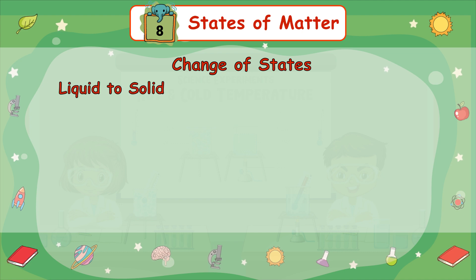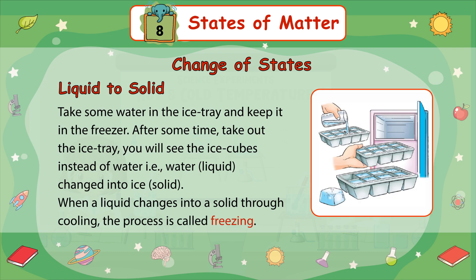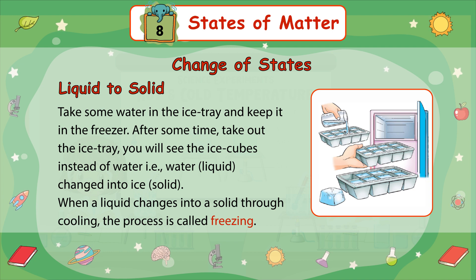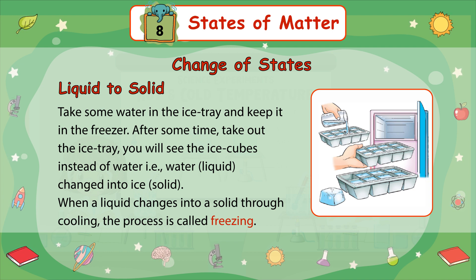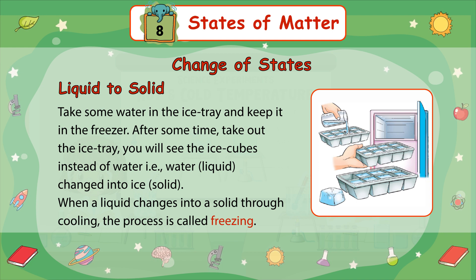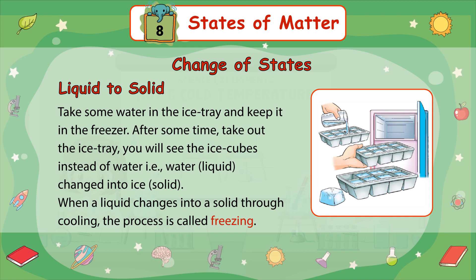Liquid to Solid: Take some water in an ice tray and keep it in the freezer. After some time, take out the ice tray. You will see ice cubes instead of water — that is, water (liquid) changed into ice (solid). When a liquid changes into a solid through cooling, the process is called freezing.